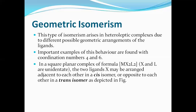In a square planar complex of the formula MX2L2, where X and L are unidentate ligands — meaning ligands having only one donor atom — two same ligands (either X or L) can be arranged differently in space: either adjacent to each other or opposite to each other. Based on this, geometrical isomerism is classified into cis and trans. In cis, two same ligands are adjacent to each other. In trans, they are opposite to each other.